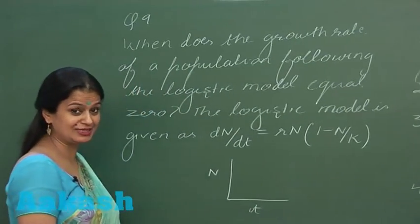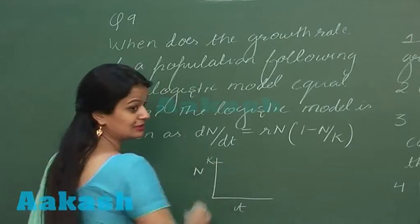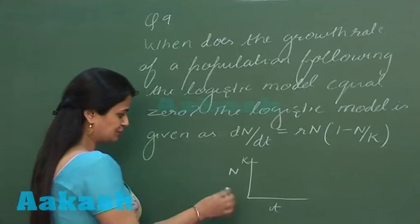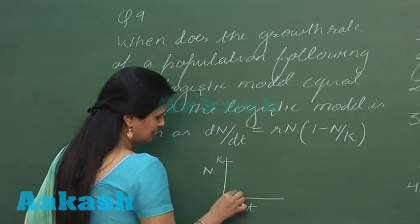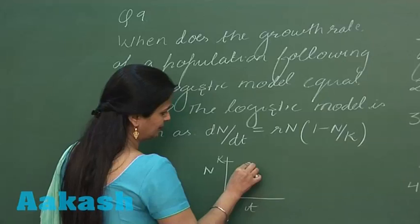...it is N, the population density, and K which I'm showing here, that is the carrying capacity of the habitat. So slowly and slowly there is an increase in the population size. Population density increases and then...